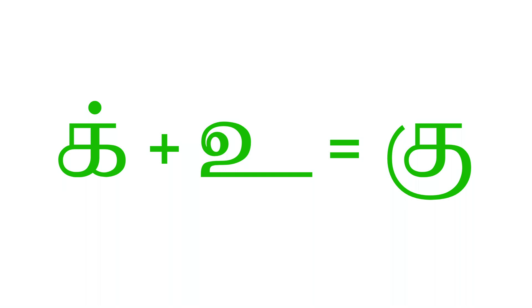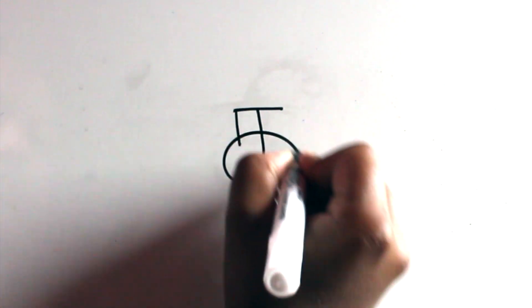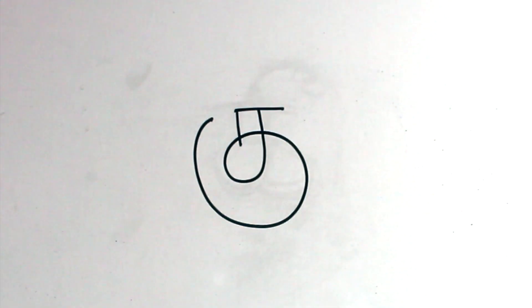Combining ik and u makes ku. Now notice here the normal ka shape has gone, it's an entirely new symbol. So this is how you write ku. Let's write it one more time.